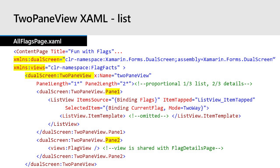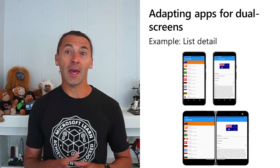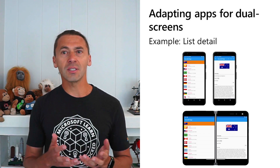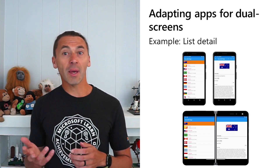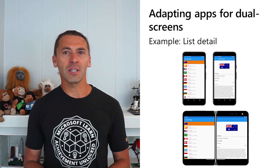In the code behind, the tapped event needs to work differently to support that. It will use the navigation stack when required on single screens, but when pane 2 is visible, data binding will update the details automatically. After extracting the details screen to make it reusable and embedding the list in a two pane view, the app supports the existing user experience on phone size devices, and when the app is spanned across both screens on a Surface Duo, both views are displayed and aligned to the hinge.